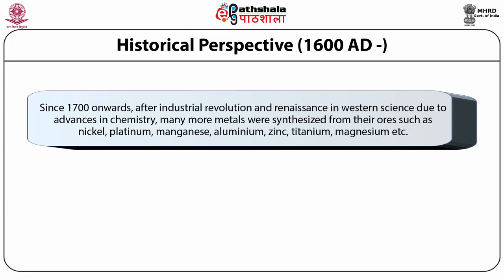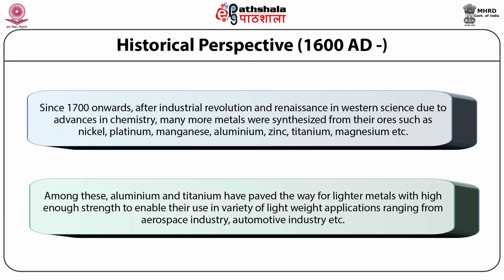Since 1700 onwards, after the industrial revolution and renaissance in western science, due to advances in chemistry, many more metals were synthesized from their ores such as nickel, platinum, manganese, aluminium, zinc, titanium and magnesium. Among these, aluminium and titanium have paved the way for lighter metals with high enough strength to enable their use in a variety of lightweight applications ranging from the aerospace industry to the automotive industry.